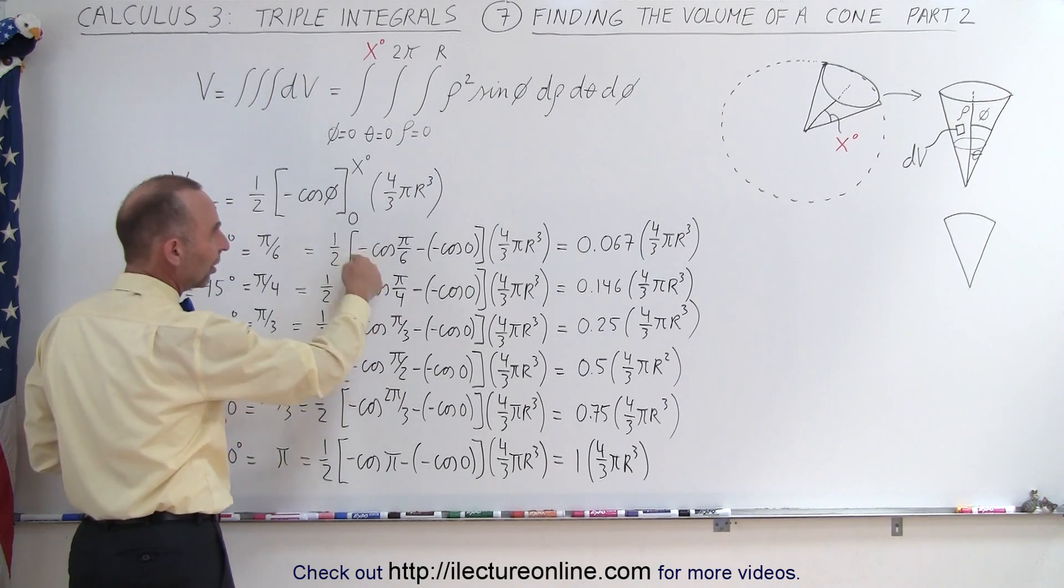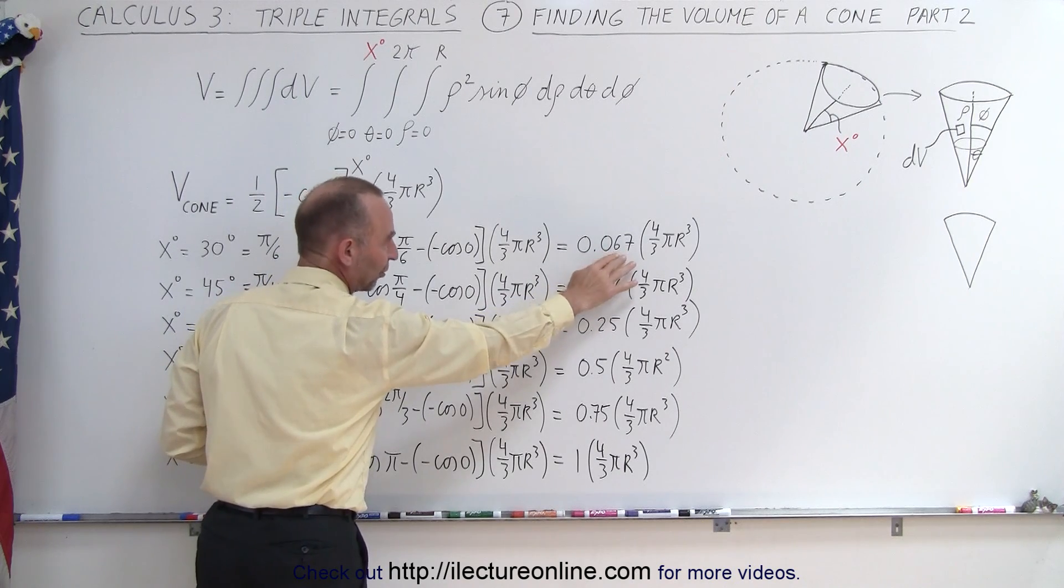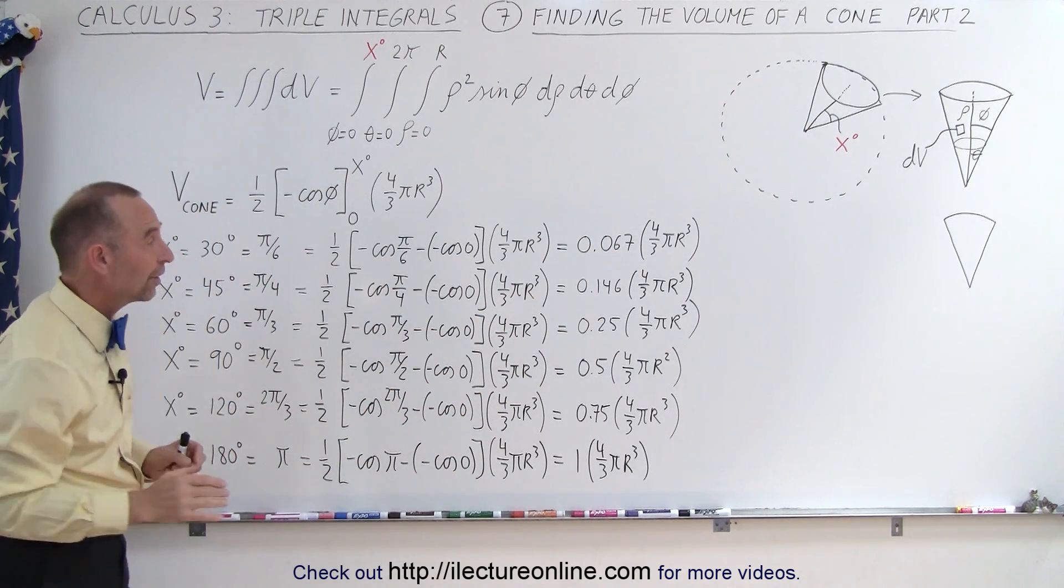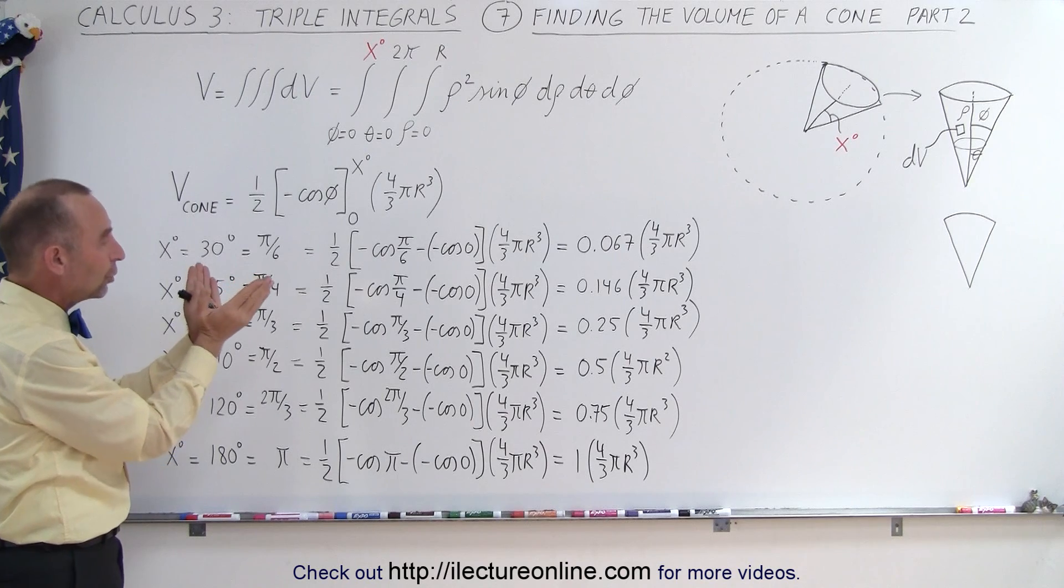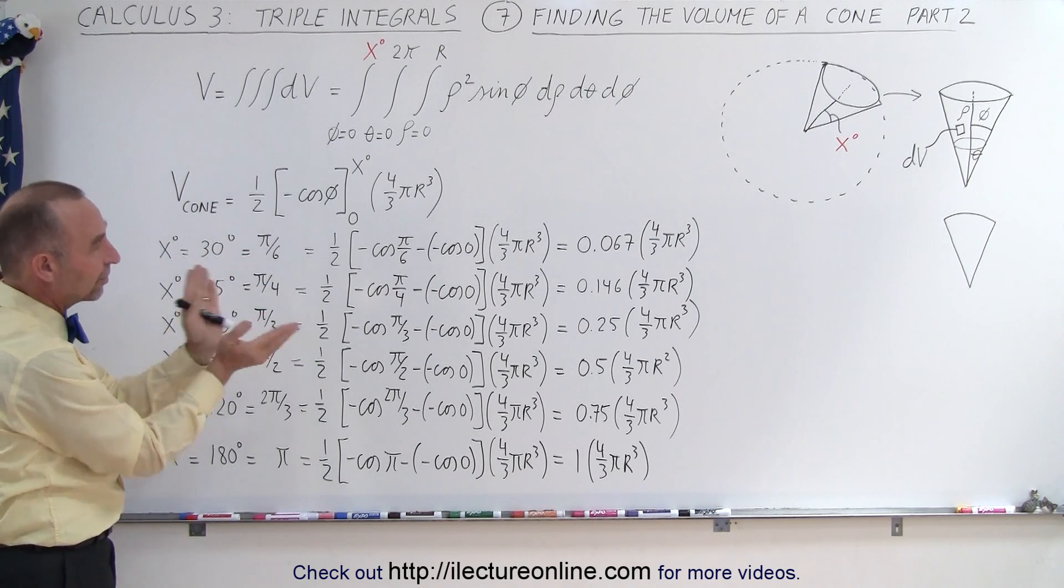Notice in each case this then gets the evaluation of 0.067 which was the 6.7% we saw in the previous video. But this will allow the cone to get bigger and bigger where the angle becomes 45 degrees, 60 degrees, 90 degrees.